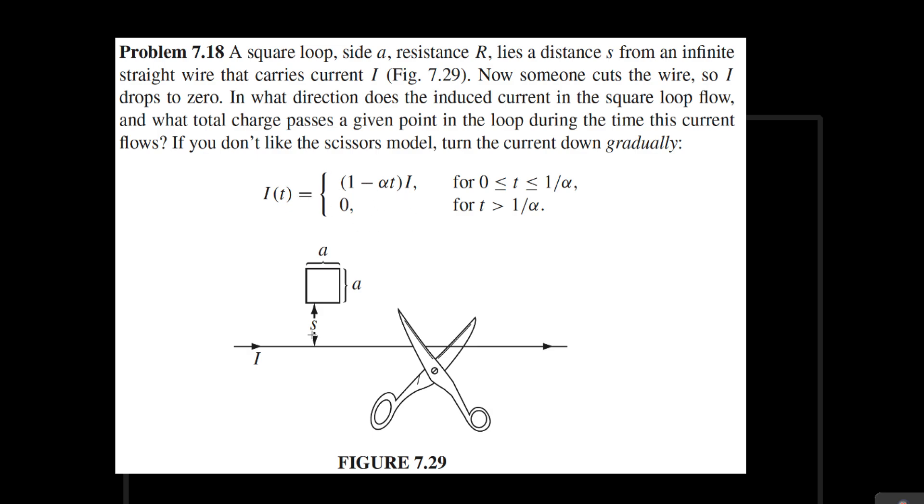In this problem, we're going to consider the case where the current in the wire gradually decreases, and that's going to induce a current in this square wire over here. We want to find the total amount of charge that passes through the wire.